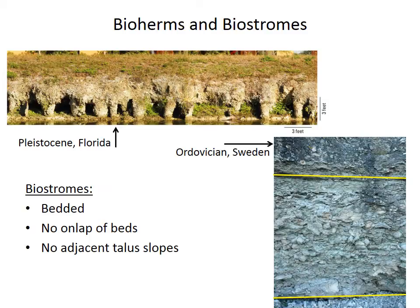This biostrome made of stromatoporoid sponges — it's not much to look at here, but the rubbly blobs that you see are the individual sponge features.